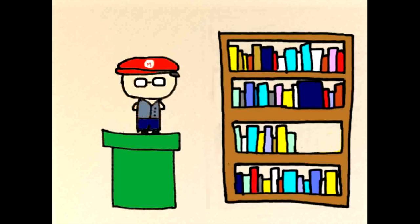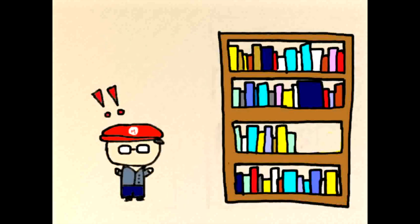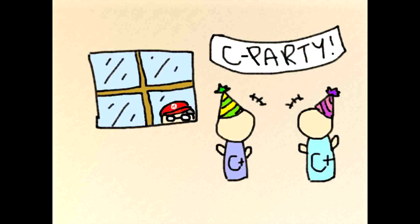So Mr. Mario takes a trip to his local library to figure everything out. Oh no! There are no books on C programmers in the library. And now Mr. Mario can't join the C party if he doesn't understand the C programmers.